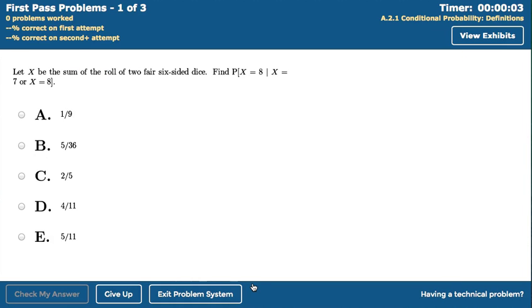When you enter the system, you'll go straight to the first problem. If there are exhibits available, those will appear in the upper right corner, just like they do for the CBT-style practice exams.